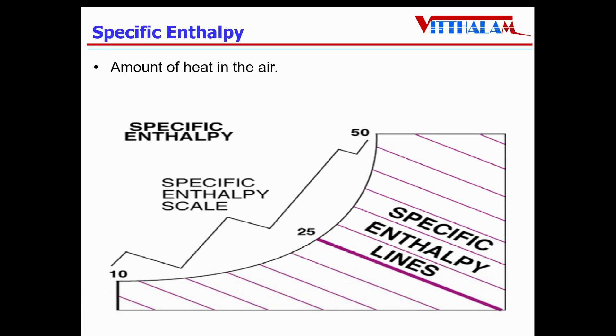Specific enthalpy, which is nothing but amount of heat in the air. As the name indicates, specific means per kg. So the unit will be either kilojoule per kg of dry air or kilocalorie per kg of dry air. It is also straight inclined lines, uniformly spaced like wet bulb temperature.